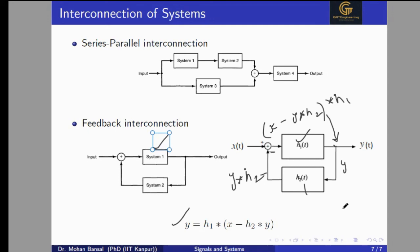So these are some interconnections of the system. The first is the series interconnection, the second is the parallel interconnection, the third is the combination of series and parallel interconnection, and the fourth is the feedback interconnection.